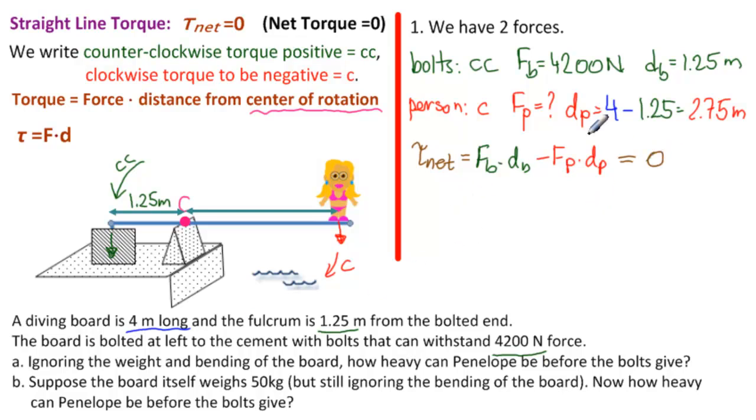Substitute and calculate. Here we have newtons times meters, newtons times meters, so we're good. So, what do we have? 4,200 times 1.25 minus, F_P is what we're looking for, and d_P is 2.75. And that is equal to zero. So, we're going to put this on one side and this on the other side, but at the same time, write it backwards. So, F_P times 2.75 equals 4,200 times 1.25.